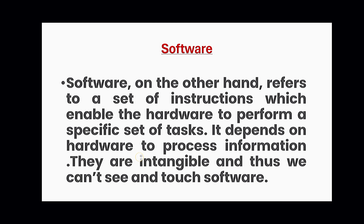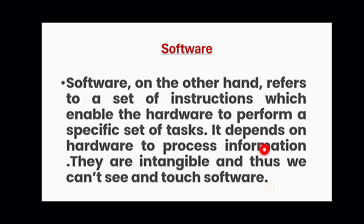If we talk about software, software on the other hand refers to a set of instructions which enable the hardware to perform a specific set of tasks. It depends on hardware to process information. Software is intangible — we can't touch software, though we can see it.